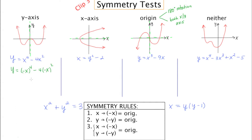I've replaced every x with negative x and now I'm going to expand. Negative x to the fourth is x to the fourth. Negative x squared ends up being x squared, so this ends up being negative 4x squared. Since the result we got is the same as the original, this is an example of y-axis symmetry.